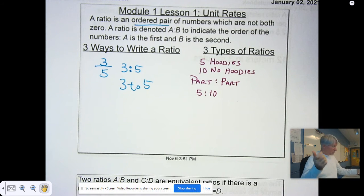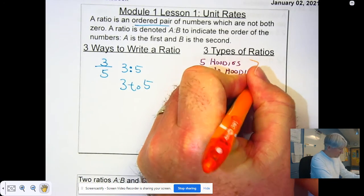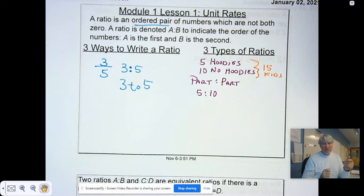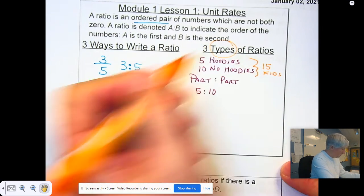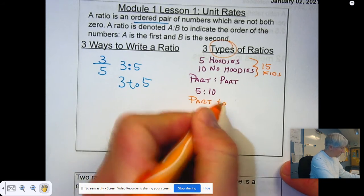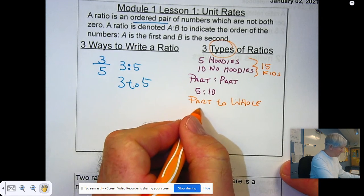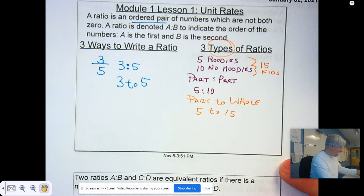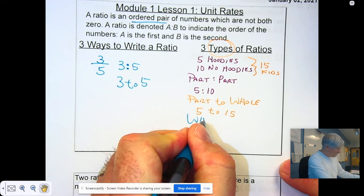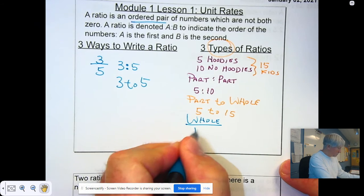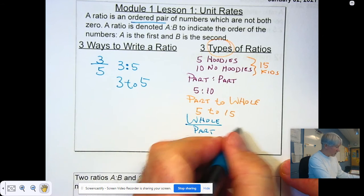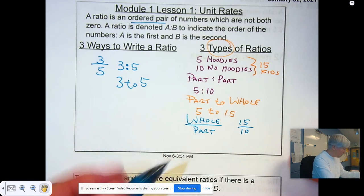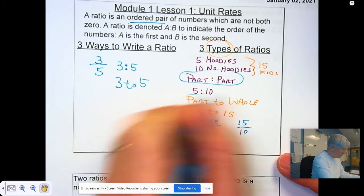But if a kid either has a hoodie or doesn't, that means there are 15 kids in the class. And if there's 15 kids in the class, that means the whole class has 15. So, the other types of ratios are part to whole. Maybe I would say there are 5 kids with hoodies compared to the whole class of 15. And there is whole to part. I might say that there are 15 kids, 10 of those are not wearing hoodies.